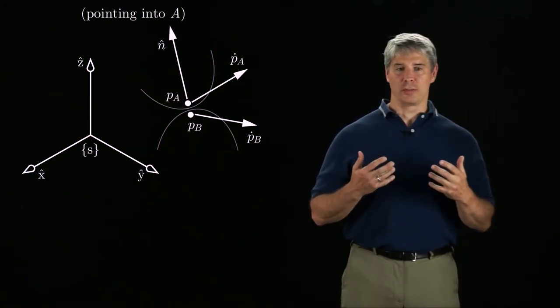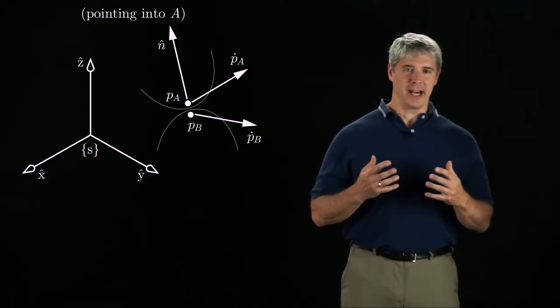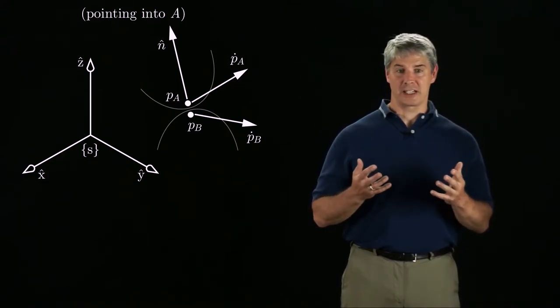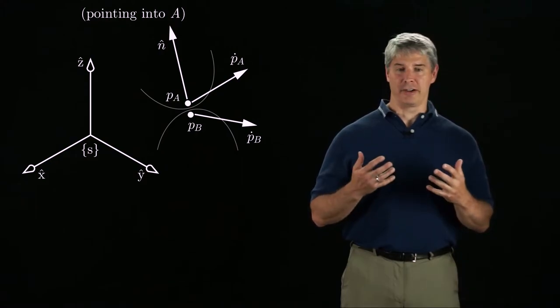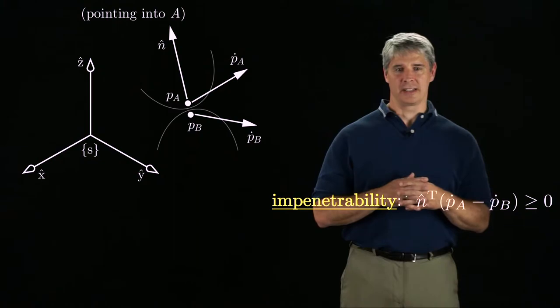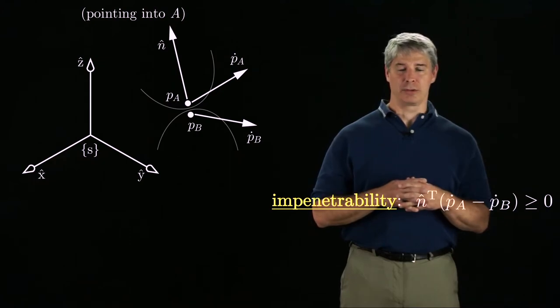Now let's define the contact normal N as pointing into body A. By our first order analysis, the rigid body assumption says that the velocity of point A relative to point B in the direction of the normal must be greater than or equal to zero. In other words, the impenetrability constraint says that the dot product of the normal with P dot A minus P dot B must be greater than or equal to zero.